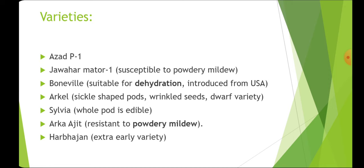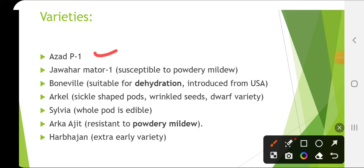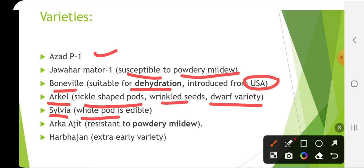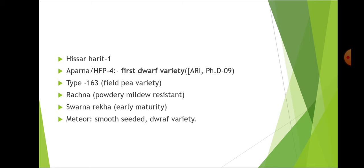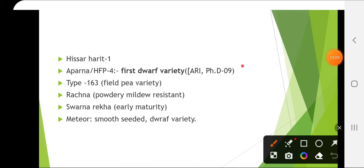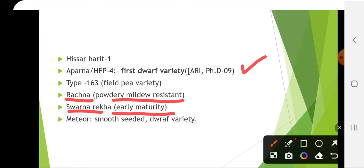Varieties of pea: Azad Pea 1, Jawahar Matar 1 (susceptible to powdery mildew), Bonneville (suitable for dehydration, introduced from USA), Arkel (sickle-shaped pods, wrinkled and dwarf variety), Sylvia (whole pod is edible), Arka Ajit (resistant to powdery mildew), Harbhajan (extra-early variety), Hisar Harith 1, Aparna (the first dwarf variety of peas — important), Type 163 (field pea variety), Rachna (powdery mildew resistant), Swarna Rekha (early maturity) and Meteor (smooth-seeded and dwarf variety).